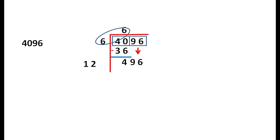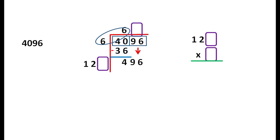We add 6 plus 6 to get 12, giving us 12 with a blank space. We use 496 and multiply 12 with the same digit. We try 121, 244, 369, and 496. We find 4, giving us 124 × 4 = 496. The remainder is 0, so the square root of 4096 is 64.